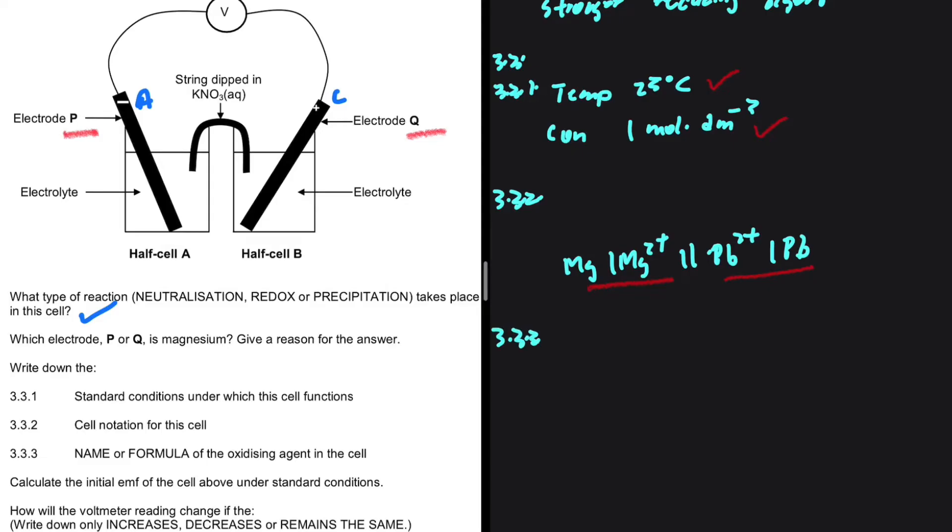3.3, name or formula of the oxidizing agent in the cell. The oxidizing agent is the species that gains the electrons. That is experiencing a reduction. Well, in our case,